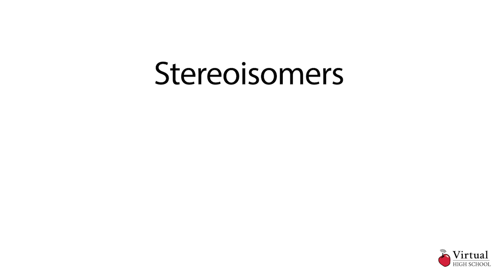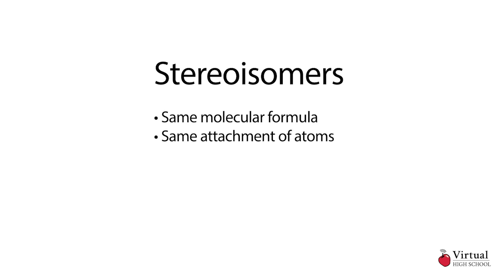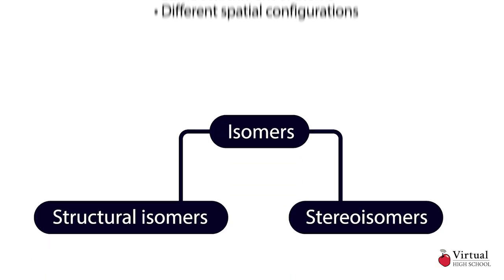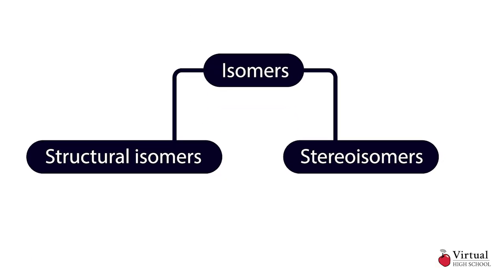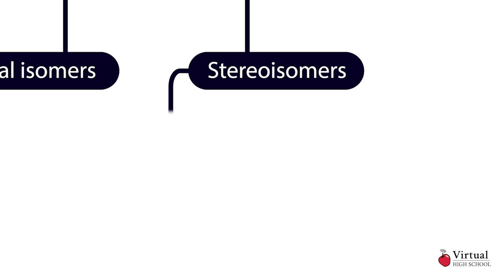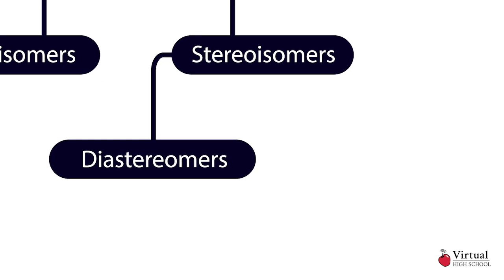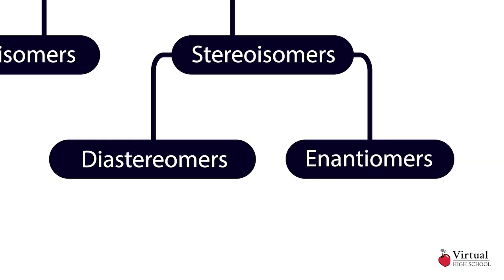Stereoisomers are compounds with the same molecular formula and the same attachment of atoms, but different spatial configurations. Stereoisomers are divided into two groups: diastereomers and enantiomers.